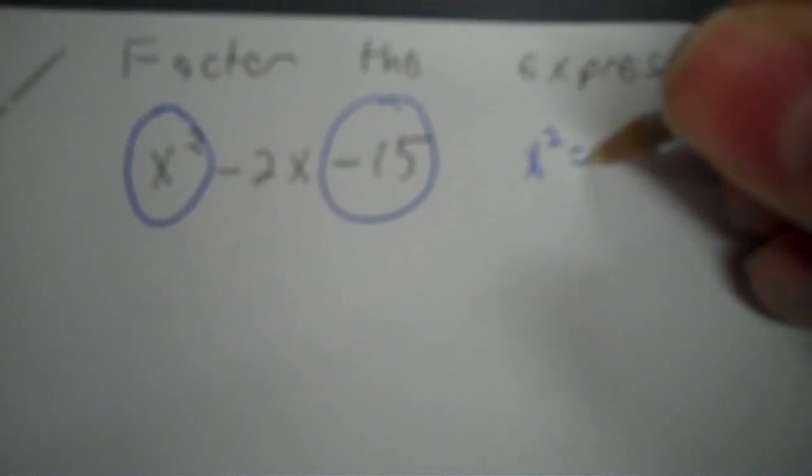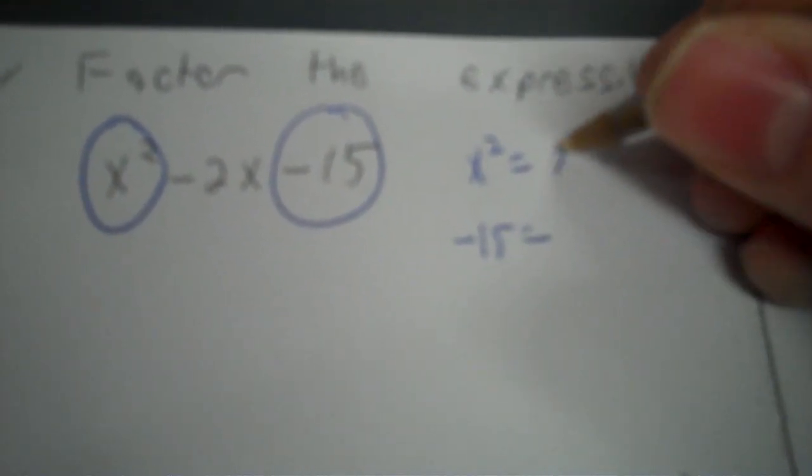Okay, factor the expression. That means I want it in two parentheses. You don't have to check your answer. So what I put here times what I put here has to be x to the second, and what I put here and what I put here has to equal negative 15.